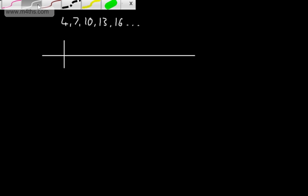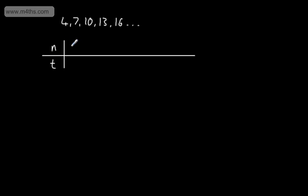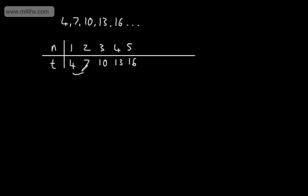What I'm going to do is put it in a table. We're going to have n and t. If we look at n, this is the position in the sequence, so we'll have 1, 2, 3, 4, and 5. So the first term is 4, the second is 7, the third is 10, the fourth is 13, the fifth is 16. Make sure you check that it is going up by 3 each time.